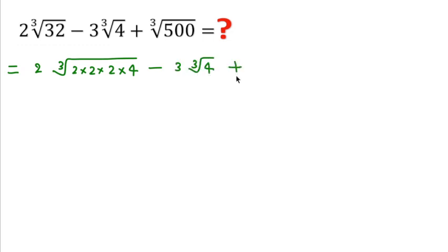And plus we can write cube root of 500 as 5 into 5 into 4. 5 into 5 into 5 is 125 and 125 into 4 is 500.